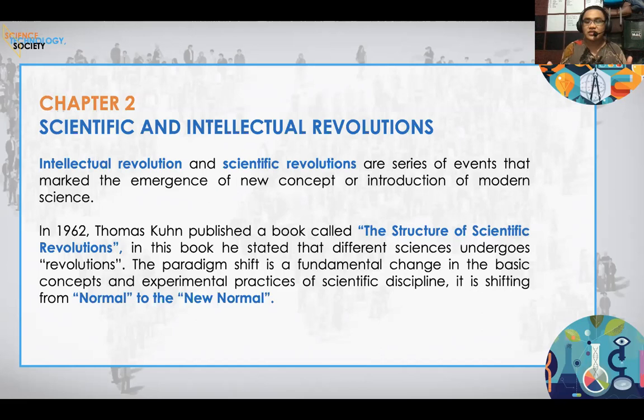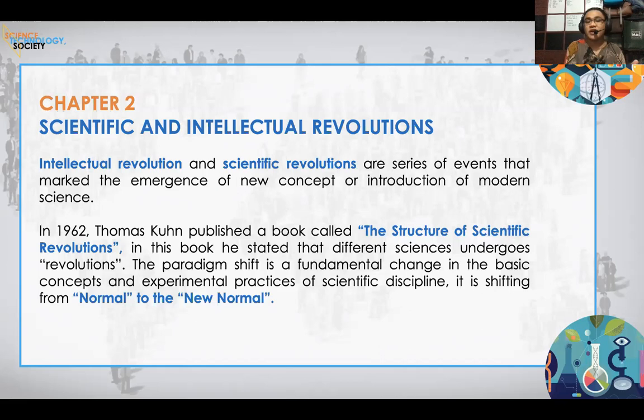In 1962, a scientific writer named Thomas Kuhn wrote a book called the Structure of Scientific Revolutions. In it, he stated that science undergoes revolutions — meaning it changes throughout time — because it enters a new paradigm, called the paradigm shift, changing from the previous normal to the new normal.